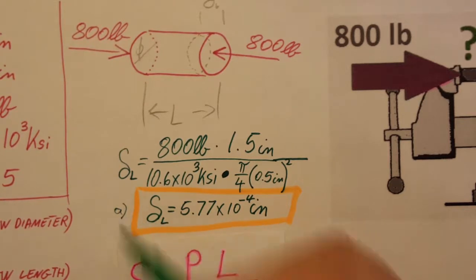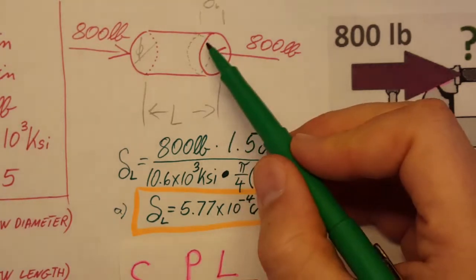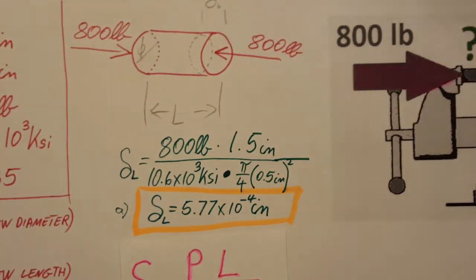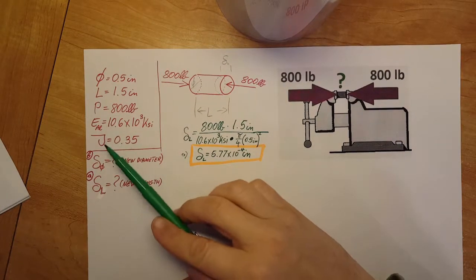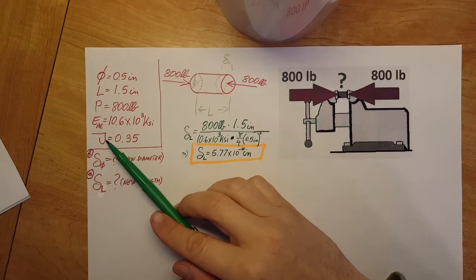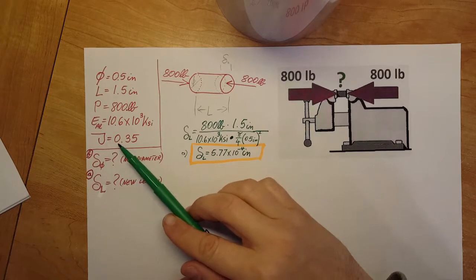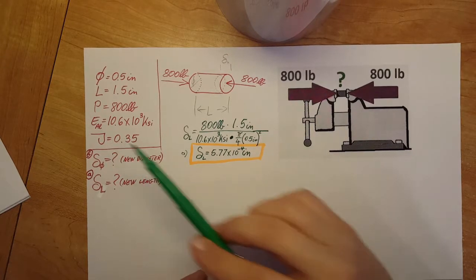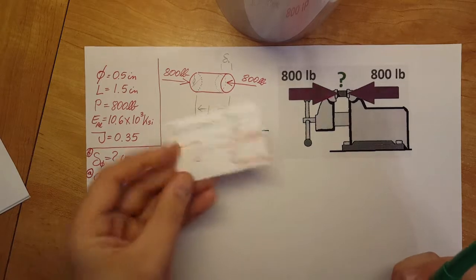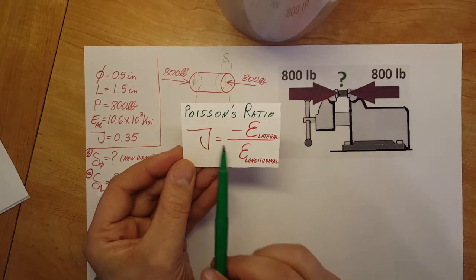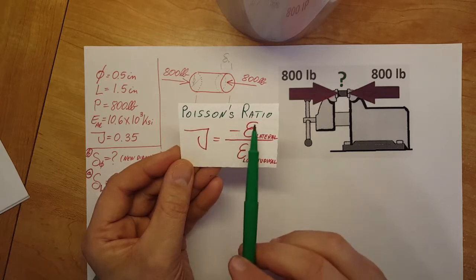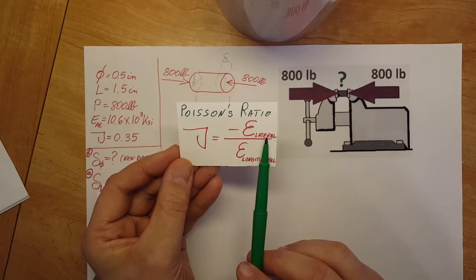Now in part B they want us to find the change in the diameter after this change in length occurred. If we look, we can see that we have nu given, which is Poisson's ratio, as 0.35.